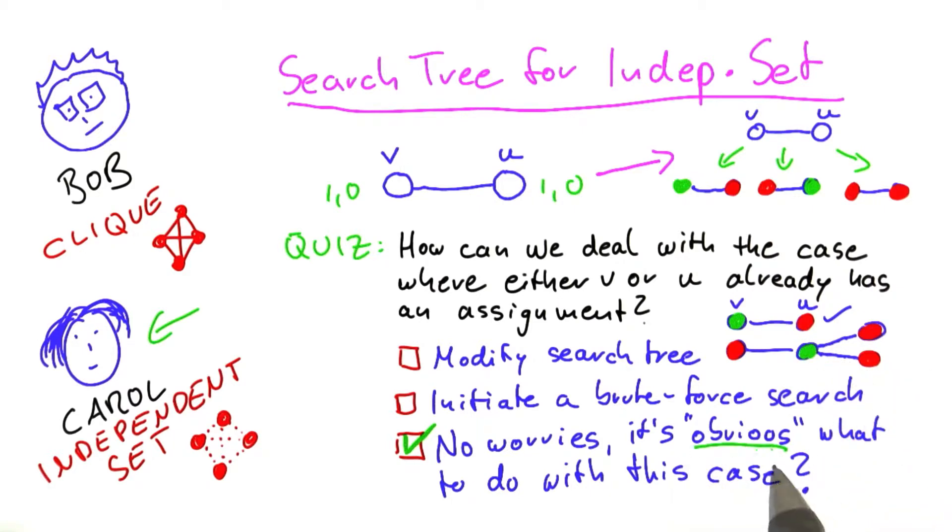It might not have been obvious in terms of thinking it through what to do in this case. But for an algorithm, we can design it in a way so that the algorithm always knows what it is to do. First of all, it looks for edges where both vertices do not have an assignment. And once it cannot find those edges anymore, then it will know how to deal with the remaining vertices.